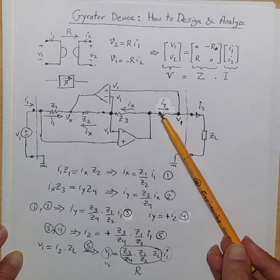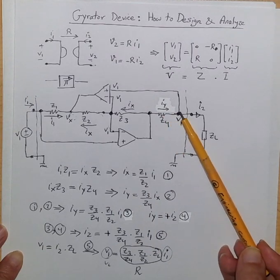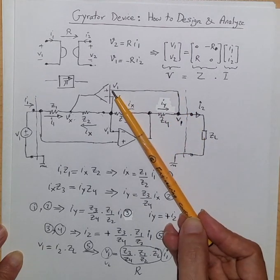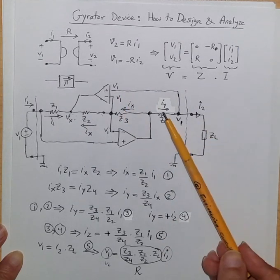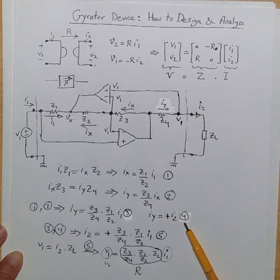And we know that when we have current I1 there is no current going through the input terminal of ideal op-amp because input impedance is infinite. So I2 has to be equal to Iy, that is here, number four.